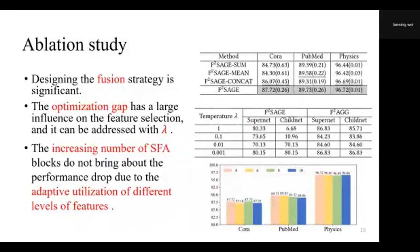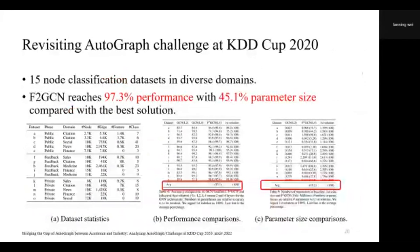In the ablation study, we evaluate the importance of the design and the fusion strategy, the influence of the temperature, and the influence of the number of SFA blocks. All these experiments demonstrate the effectiveness of the design and the method. In recent work, we further evaluated our method on the AutoGraph challenge at KDD CUP 2020, which has 15 node classes. Compared with various GNNs, we only require a comparable parameter size compared with the best solutions. More details can be found in our paper.